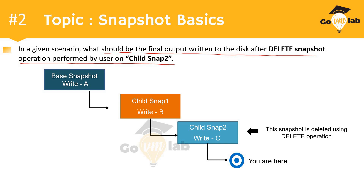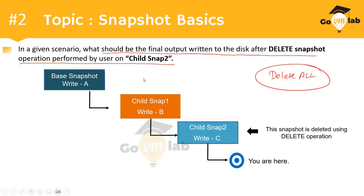In the previous scenario we discussed the delete all operation. When a user performs delete all, all data changes are written to the base disk, and after a successful commit back to the base disk, all snapshots in the chain are deleted.